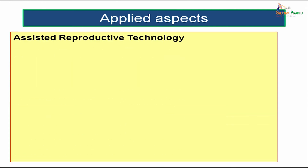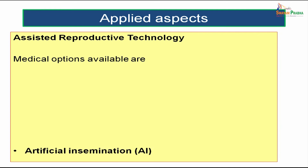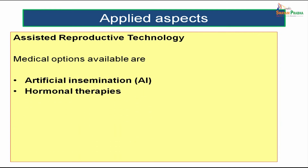You might have heard about assisted reproductive technology. Sometimes a couple would not be able to give birth to their young ones — there might be some fault with the sperm, the ovum, or the reproductive organs. Medical options available include artificial insemination and hormonal replacement therapies. Using hormones, we can boost sperm production and ovum production, and artificial insemination involves placing the sperm inside the uterine tube.